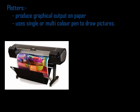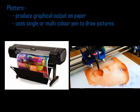The next output device is the plotter. It is used to produce graphical output on paper — for example, large flex banners with big images printed on big paper. This device uses single-color or multi-color pens to draw pictures on the paper.